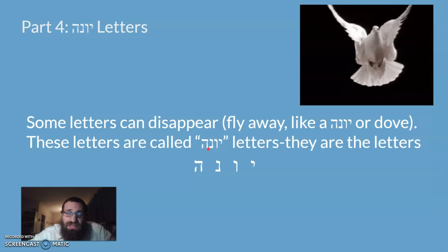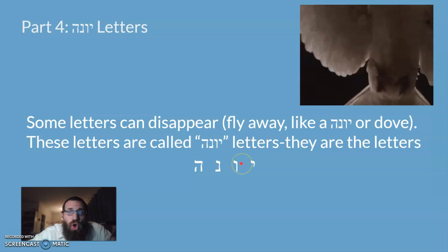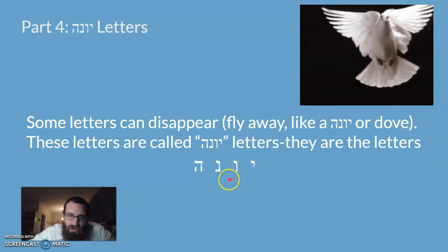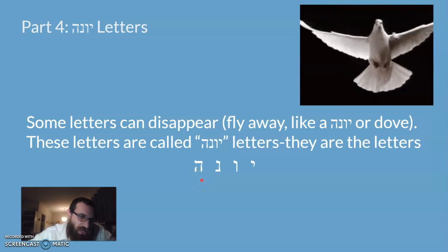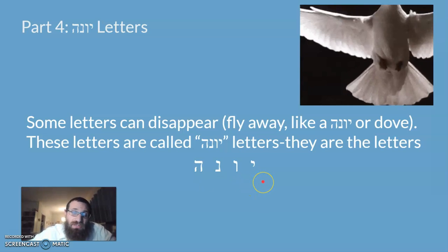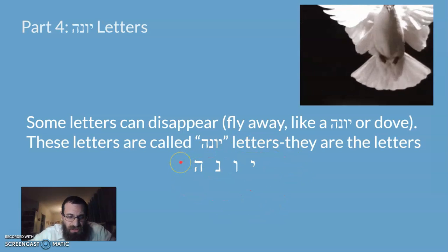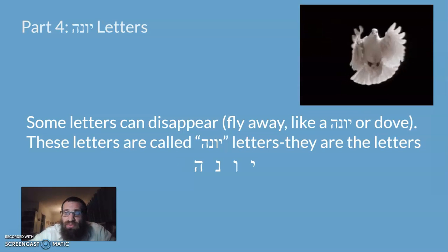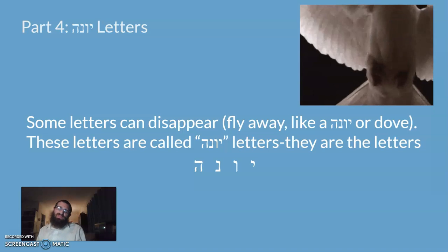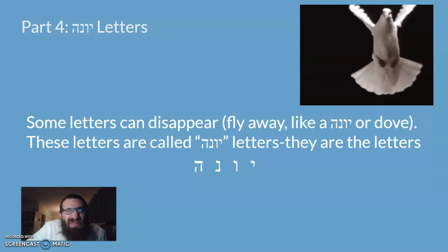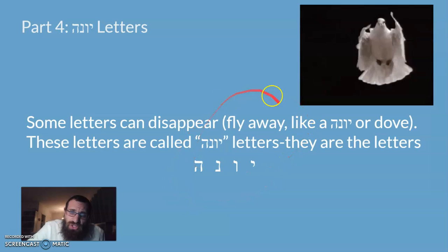There are certain letters that don't always appear — they're part of the shoresh but can 'fly away.' These are called yona letters: aleph, yud, vav, nun, and hey. They spell the word 'yona.' If you know one of these letters is part of the shoresh, it's possible that letter is not there — it flew away. In that case, you'd look for the other two letters of the shoresh to identify it. It's very rare that more than one letter falls out, so you usually have at least two letters to work with.